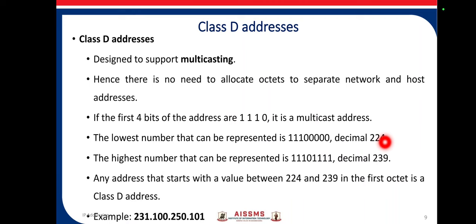The first four bits of a class D address are 1110. The lowest number that can be represented is decimal 224 and the highest is decimal 239. Any address with a first octet value between 224 and 239 is class D. An example is 231.100.250.101.